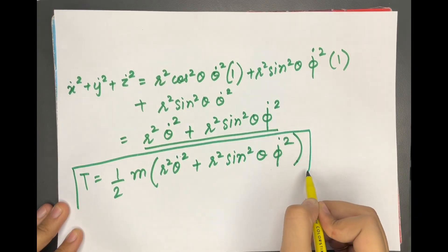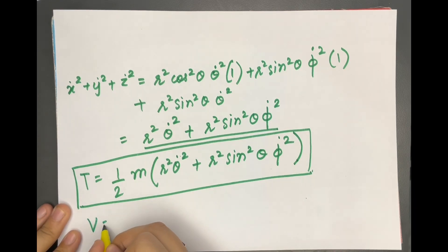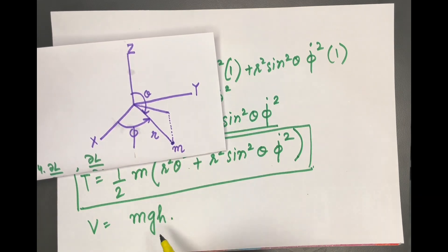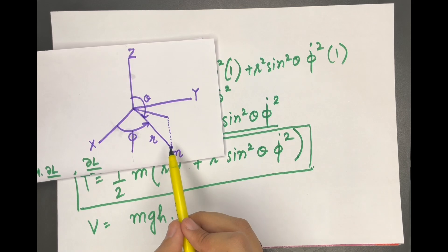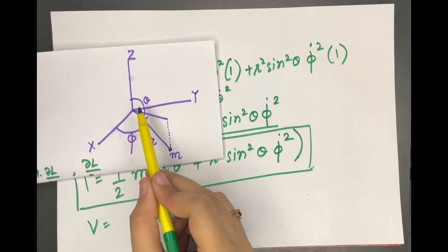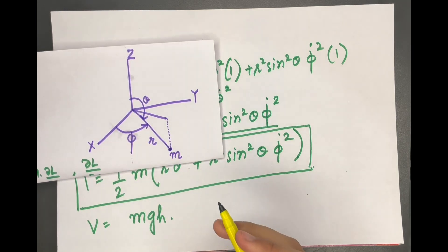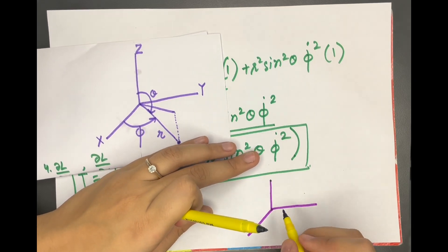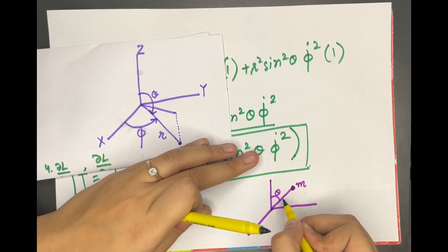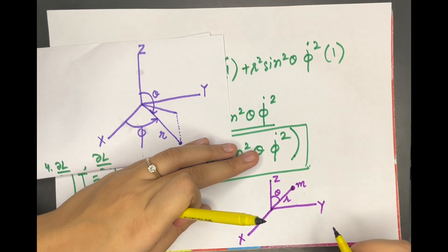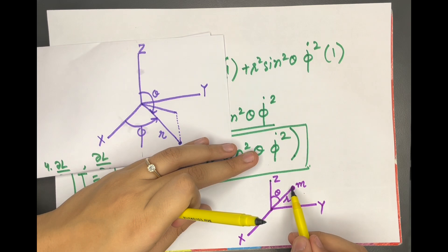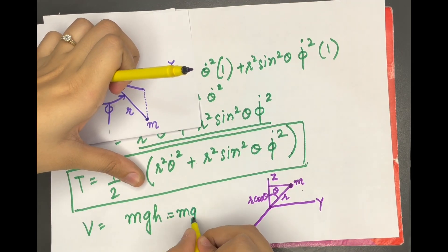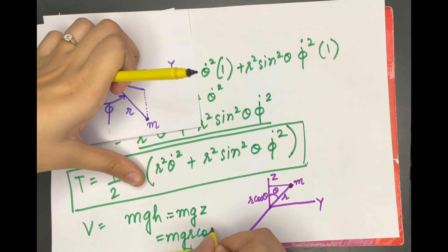We have obtained kinetic energy T. Now let's calculate potential energy V. V = mgh. According to our diagram, the height is along the z-axis. If we calculate height in terms of r and θ — the angle between the z-axis and the string — the height equals r cosθ. So V = mgz = mgr cosθ.